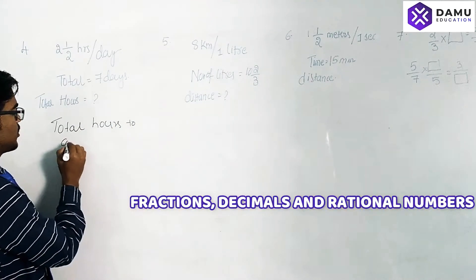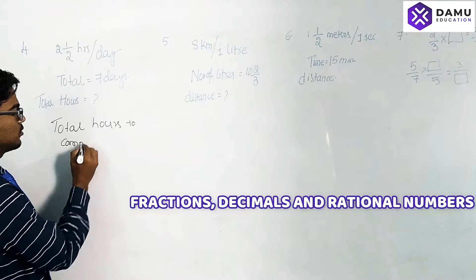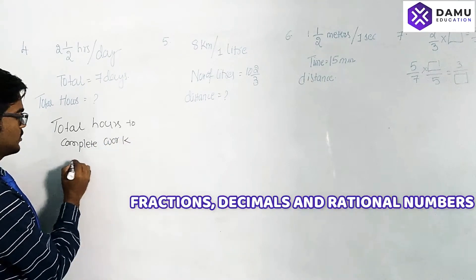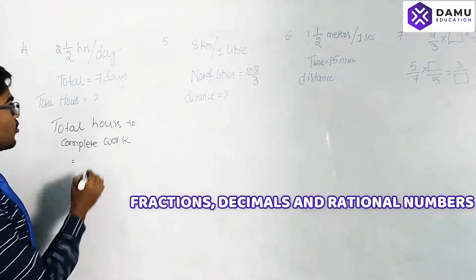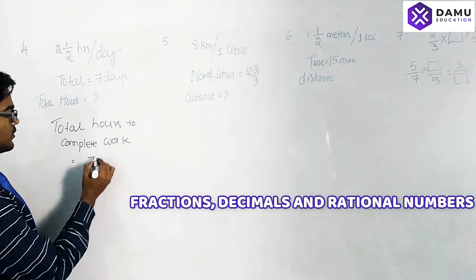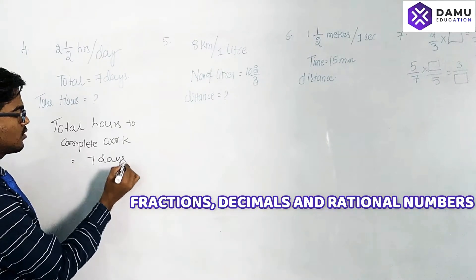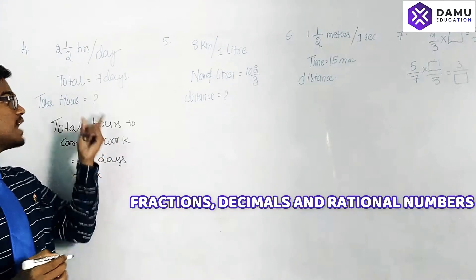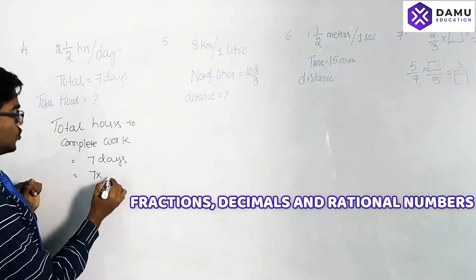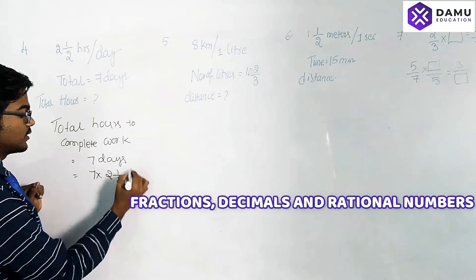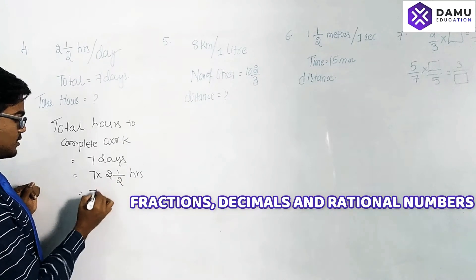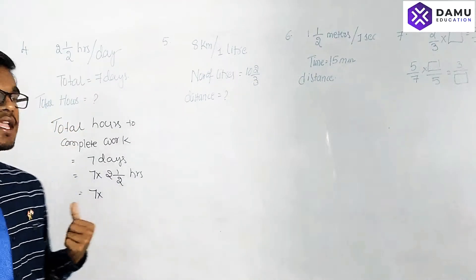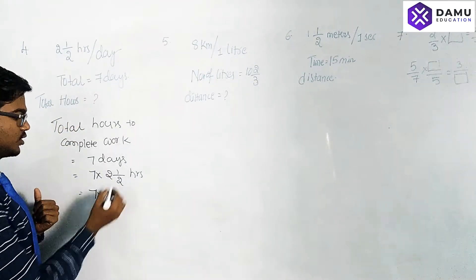Total hours to complete the work will be equal to number of days — seven days — multiplied by hours per day — two and a half hours. Then, seven multiplied by two and a half: first we are going to convert mixed fractions into improper fractions.